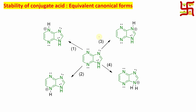Let's protonate every nitrogen. Protonation on nitrogen 1 will result in one protonated species, protonation on nitrogen 2 will result in another, nitrogen 3 will result in one more, and the fourth one similarly. Now there is a concept called equivalent canonical forms. Protonation happened on all 4 and resulted in 4 protonated species. We need to check which protonated species has maximum stability, because whoever is most stable will undergo protonation most efficiently.